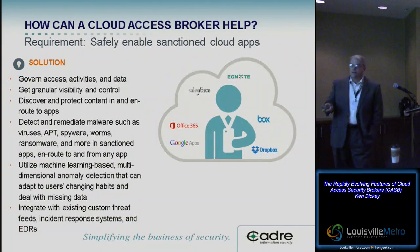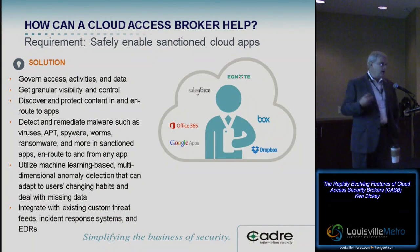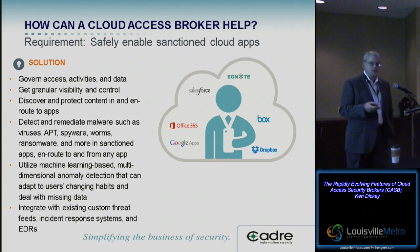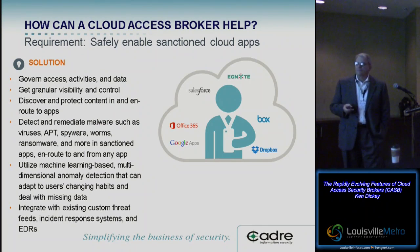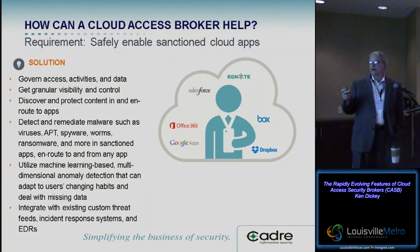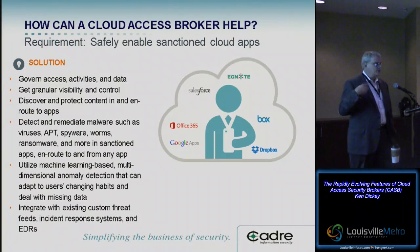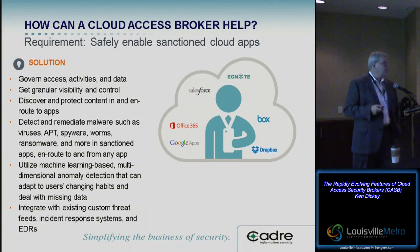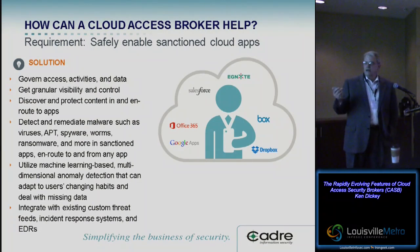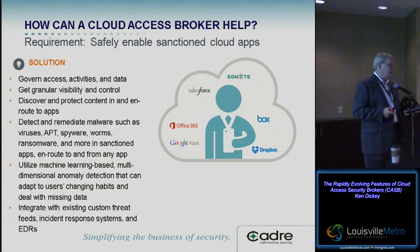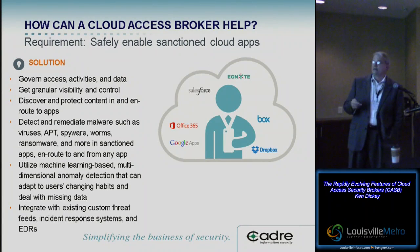The second requirement is to safely enable those sanctioned apps. You need to apply the same governance, risk, and compliance rules formulated for your business to these applications. That requires granular visibility, the ability to discover new apps as they come up, block workarounds, and detect and remediate things like malware — a feature select CASB vendors have. The ability to apply threat intelligence to data and utilize machine learning-based anomaly detection. User behavioral analysis and network behavioral analysis is the new focus, and you want to make sure you can implement that within your CASB solution.